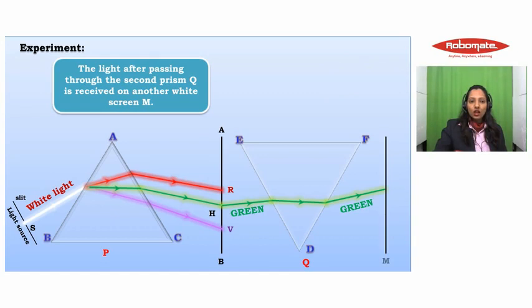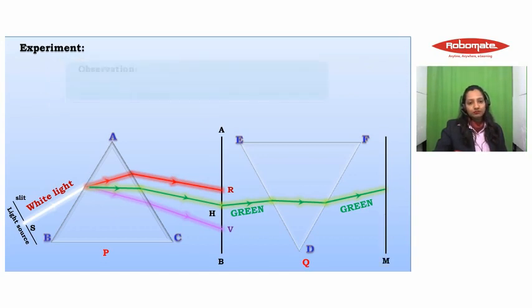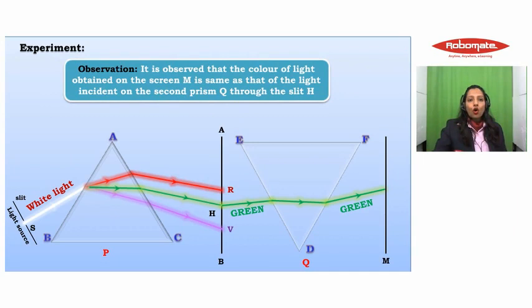The observation is that the color of light obtained on the screen M is the same as that of the light incident on the second prism Q through the slit. This means that if only green color was fallen on the first face of prism Q, then only green light was obtained. If it would have been any color, red, blue, or indigo, then only that particular color would have been produced on screen M.